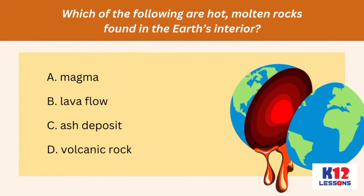Which of the following are hot, molten rocks found in the earth's interior? A. Magma. B. Lava flow. C. Ash deposit. D. Volcanic rock.